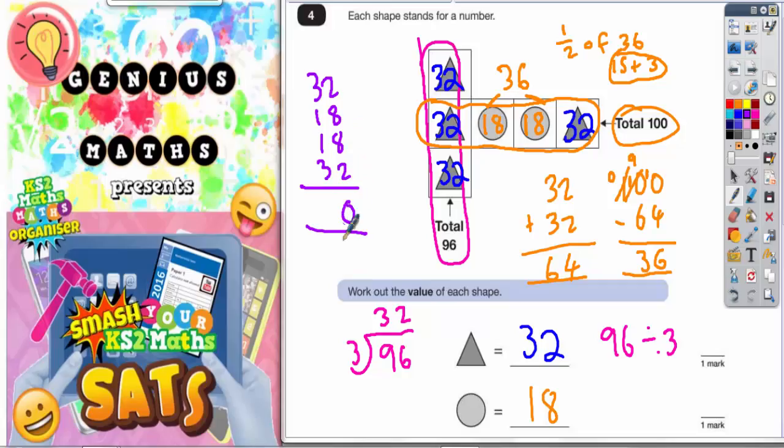Let's check it makes 100. 2 plus 8 is 10, plus 8 is 18, plus 2 is 20. Put the 0 in, carry the 2. 3 plus 1 is 4, plus 1 is 5, plus 3 is 8, plus 2 is 10.